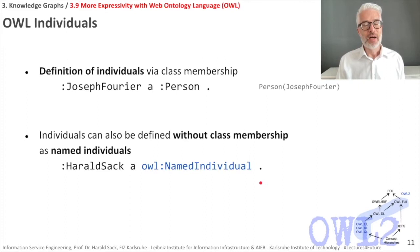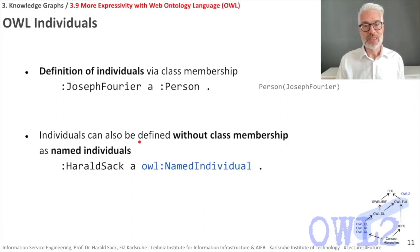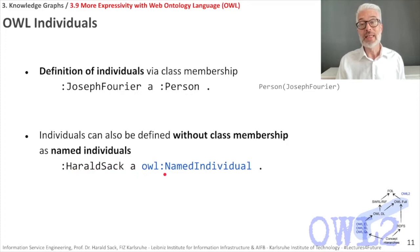We have defined classes — now let's define individuals. You define an individual via its class membership. For example, 'Joseph Fourier is a Person.' In description logic syntax, this is written as Person(JosephFourier). You can also define an individual without assigning it to a class — these are called named individuals. For example, 'Harald Sack' defined as a named individual would simply be an individual without any class assignment or further properties defined.